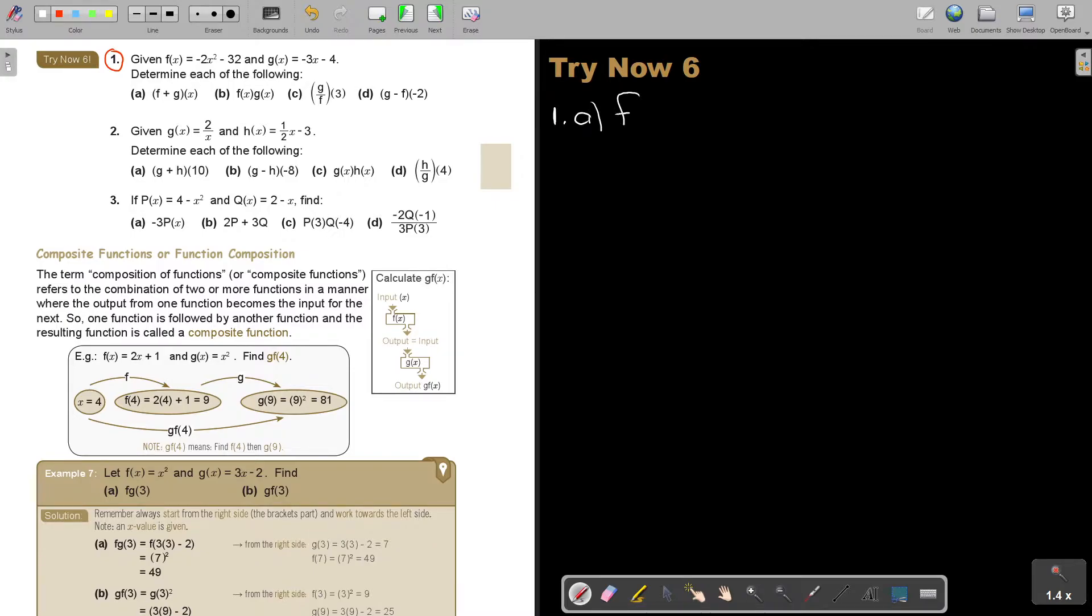Given fx, gx, determine each of the following. Let's start with a. That is actually your general function. So in a, it's f plus g and then it's x.